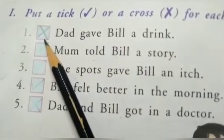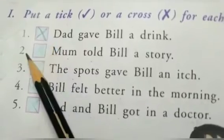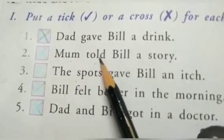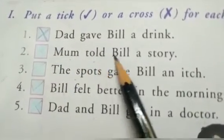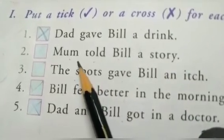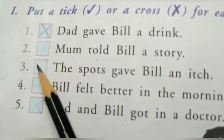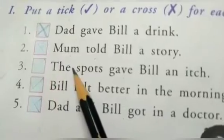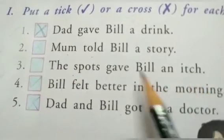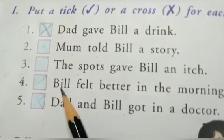The first one is wrong because mom gave, not dad. The second one is: Mom told Bill a story. Who told him a story? Dad told, so that is wrong. The next one: the spots gave Bill an itch — yes, it was.